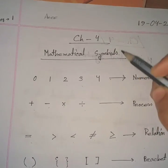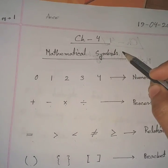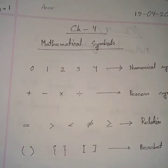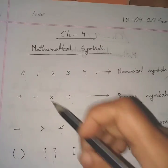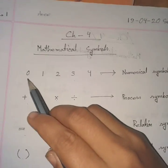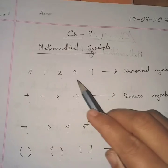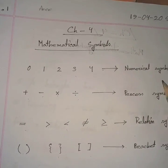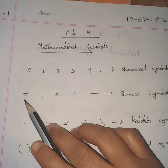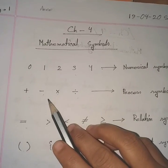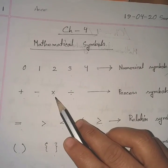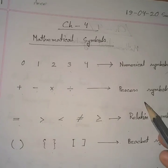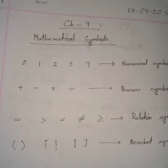It is chapter 4, that is mathematical symbols. We know that there are many symbols used in mathematics, such as 0, 1, 2, 3, 4 — they are called numerical symbols. Plus, minus, sign of multiplication, sign of division are called process symbols.